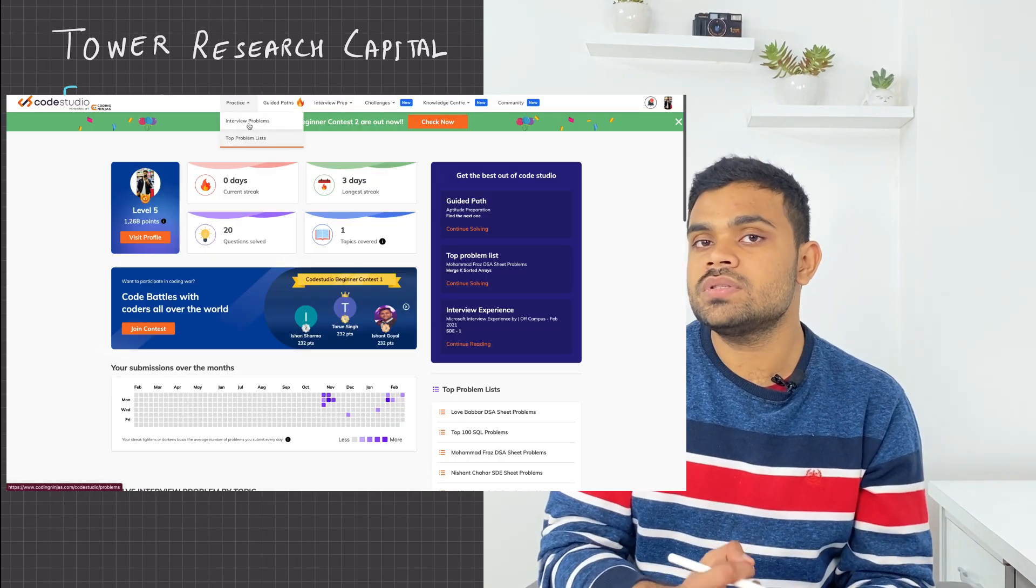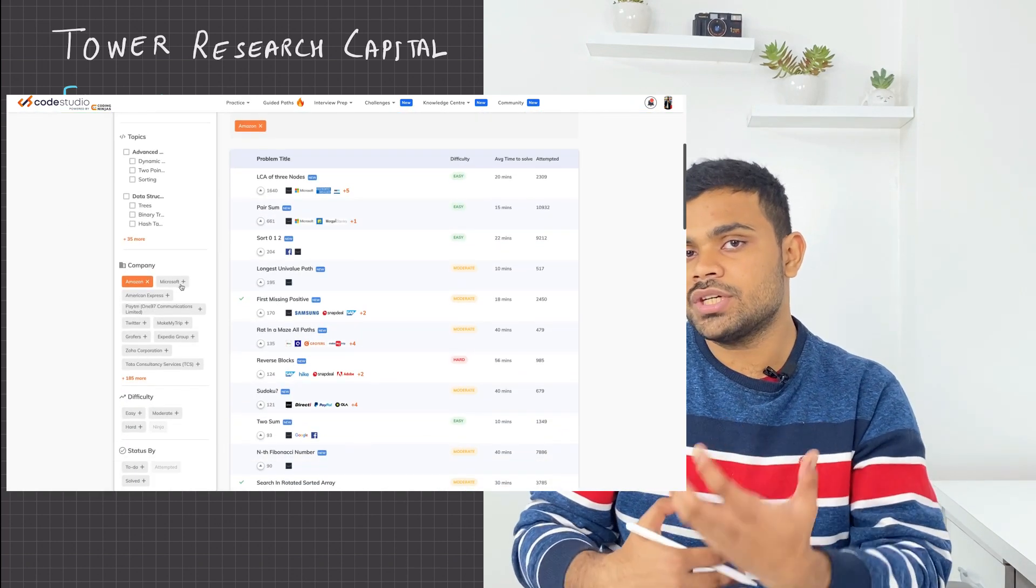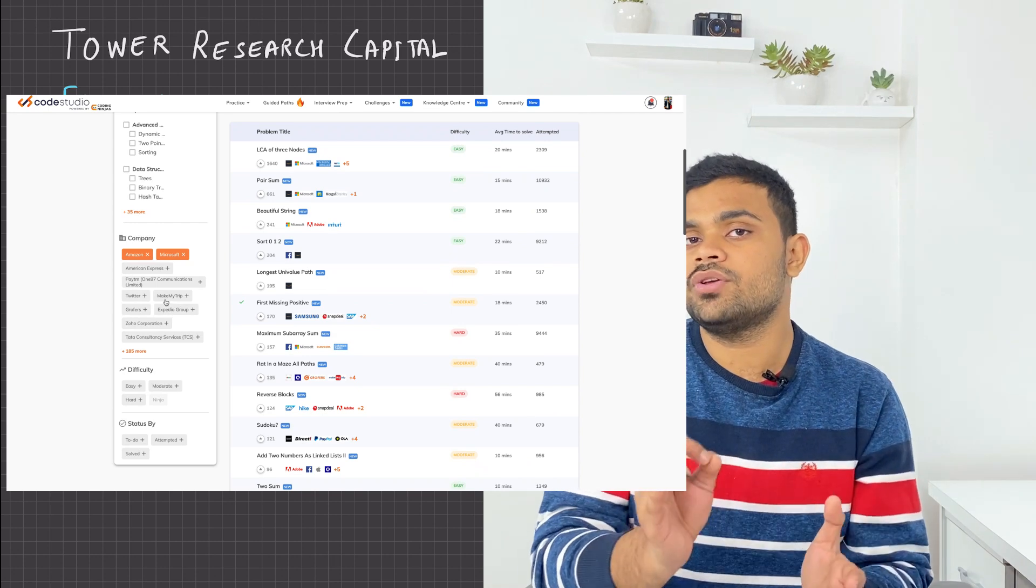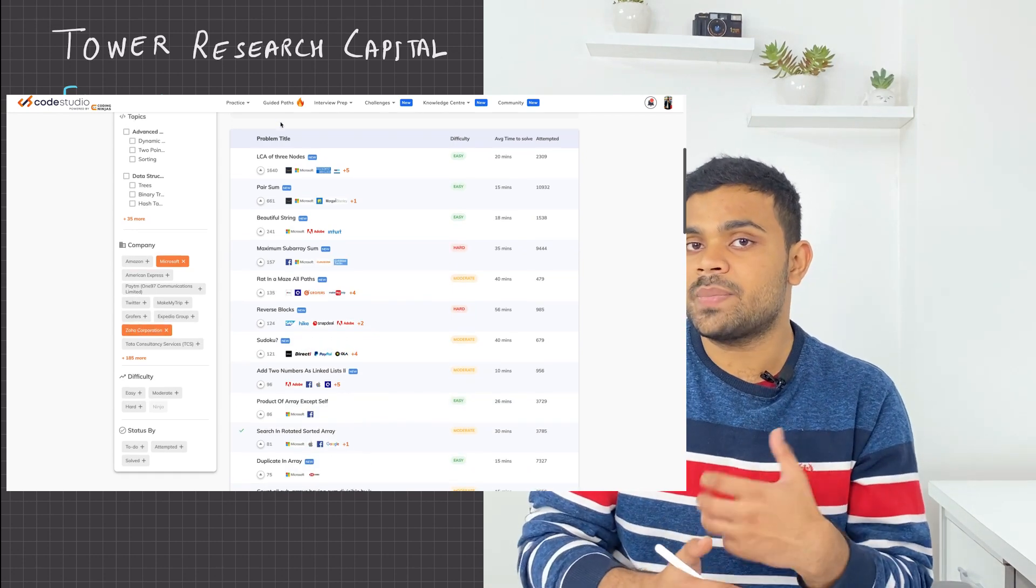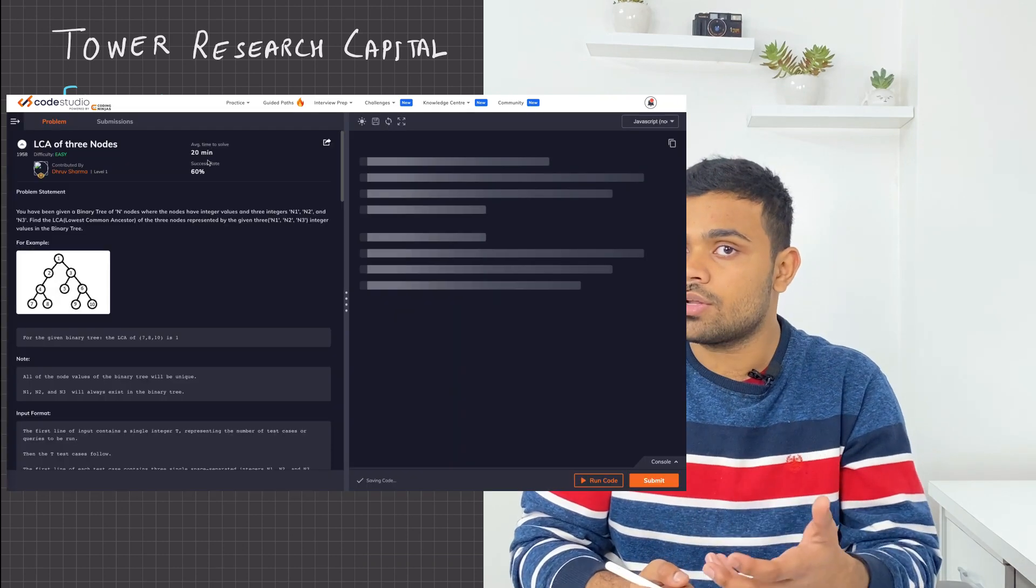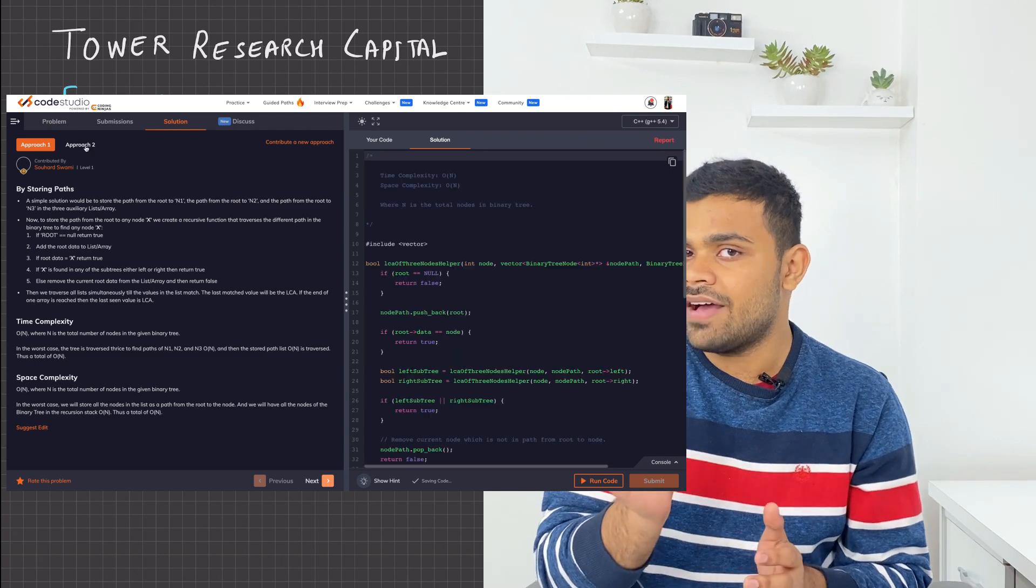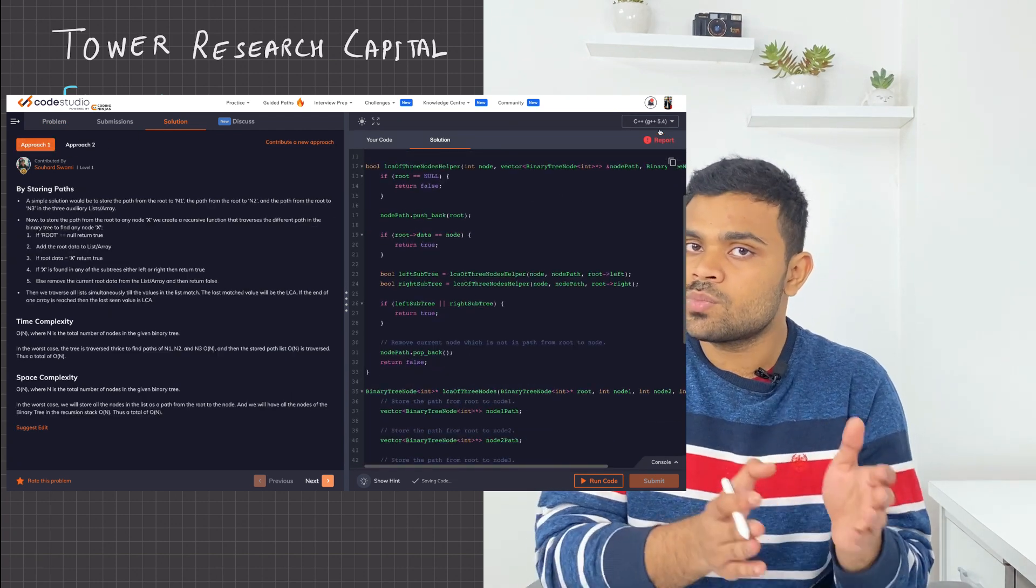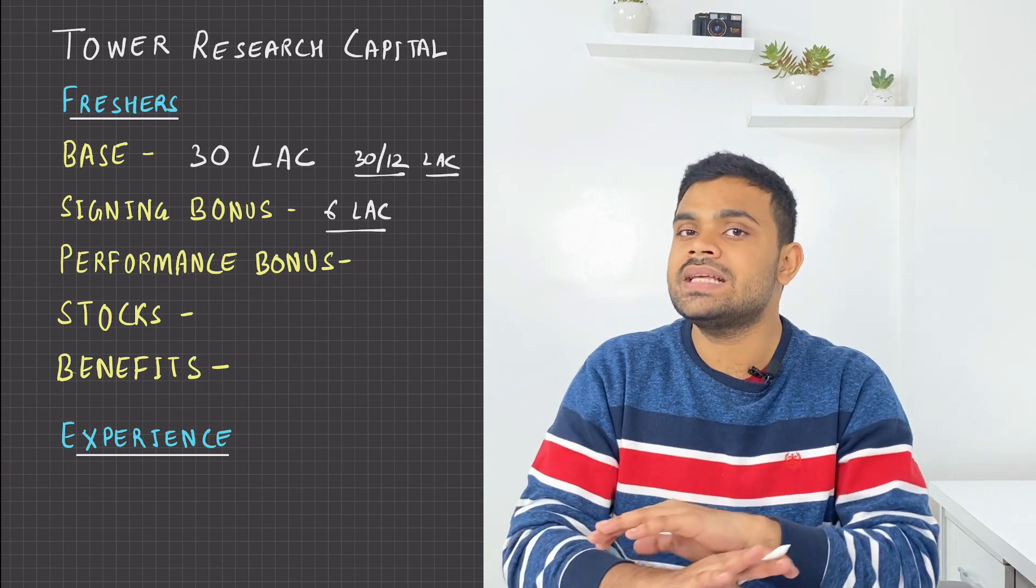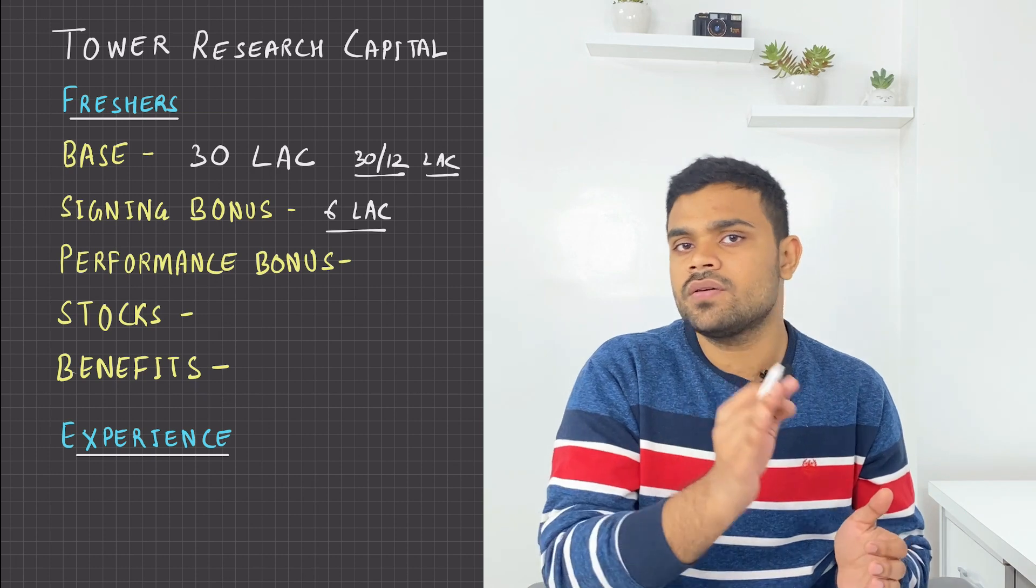There you can solve problems sorted according to the companies. Which companies you want to prepare for, according to the company you will get questions there. This is a really good platform to start practicing data structures and algorithms. Apart from this, there are several premium features such as your average time to solve this problem and all the approaches starting from the most brute force till optimized approach. All that are available free. So you can look at the solution only if you get stuck somewhere.